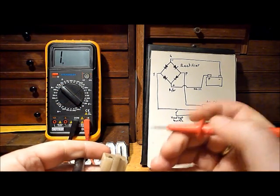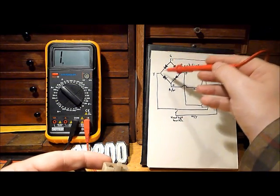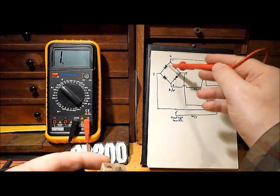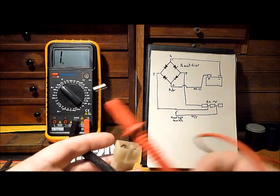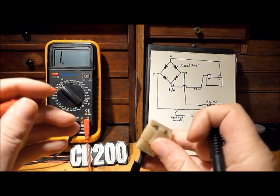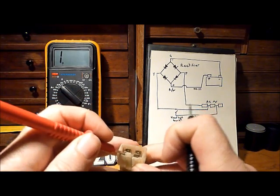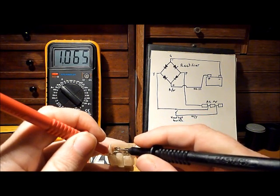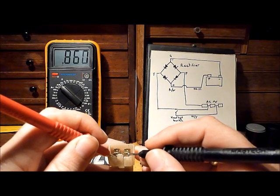Now if we put the positive from the multimeter onto our green lead and test the other three points, we should get a reading because the diode should allow the current from the multimeter to flow through the system. Positive lead from the multimeter onto the green on the rectifier, going to pink we get a reading, yellow, and then to the plus.